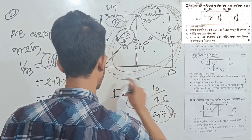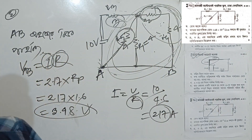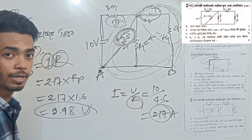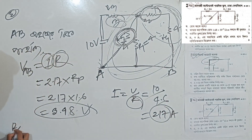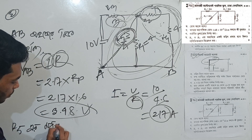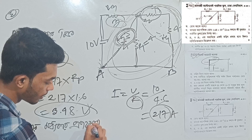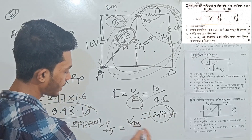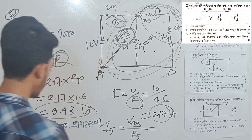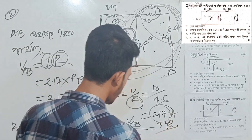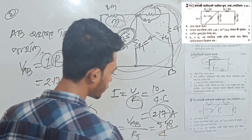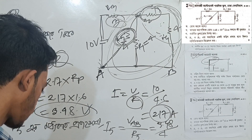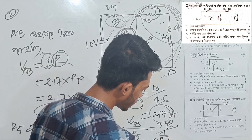The answer is 3.47 and 3.48 volt. A and B — the total is Rp. The answer is 1.8. The first one is 3.48 divided by 4, so this is 0.87 A.